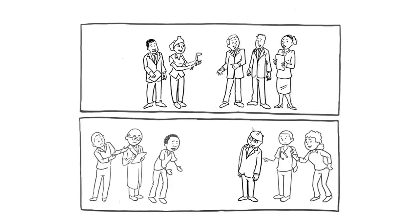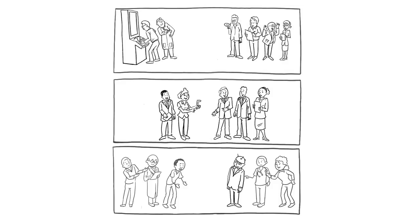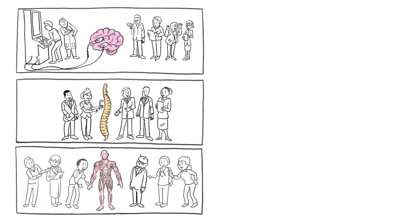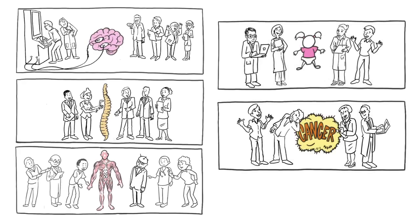Then, we focus each floor on the organ systems we understand better than most: the brain, the spinal cord, and the neuromusculoskeletal system. Then, we add a floor for children and another for cancer patients.